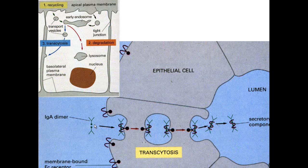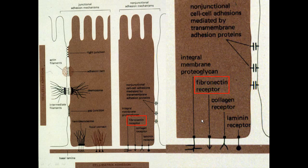Epithelial cells can pick up things from one side and undergo transcytosis to take material to the other side — that is what we will be looking at today, asking whether it is transmitted by receptors or not. Another component is that the epithelial cell sits on a basement membrane. The fibronectin receptor on epithelial cells helps polarize the cell; treating a membrane with fibronectin causes endothelial cells to attach at the basal portion and create a polarized cell.